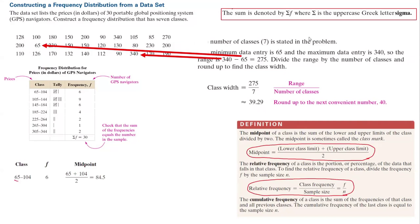It starts at 65 and stops at 104. The midpoint is 65 plus 104 divided by 2, which is 84.5. The relative frequency is 6 divided by 30, which is 20 percent. And cumulative frequency of the first class is the same as the frequency of that class.